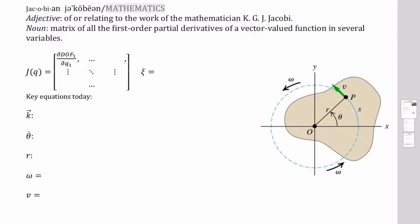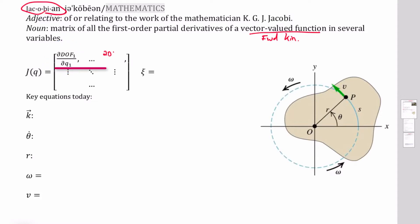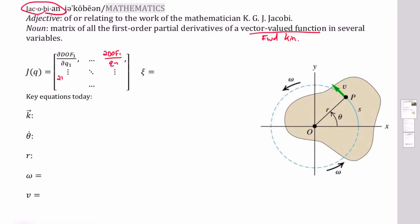The Jacobian is related to the work of a famous mathematician. We build a matrix of all the first-order partial derivatives of a vector-valued function. Our vector-valued function is the forward kinematics. The top-left entry is the partial derivative of degree of freedom one with respect to q1. The entire first row is degree of freedom one with respect to all joints through joint n, and as we go down the first column each new row corresponds to a different degree of freedom, up to degree of freedom m.